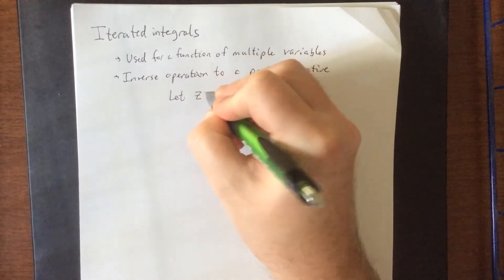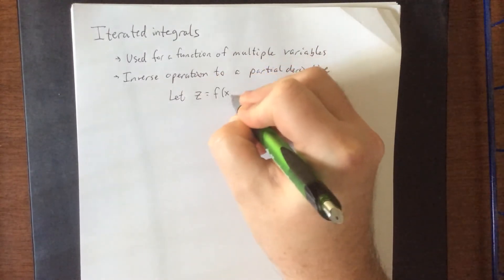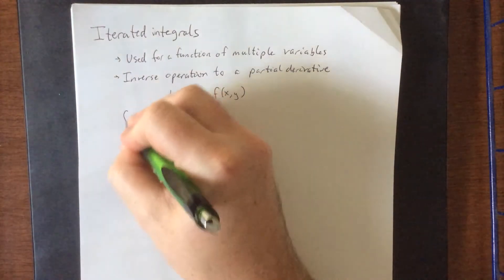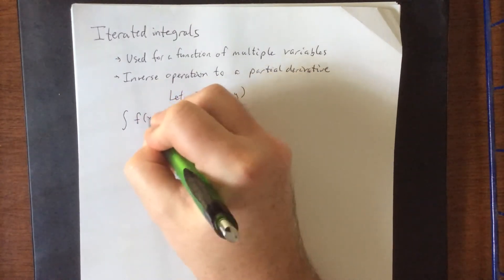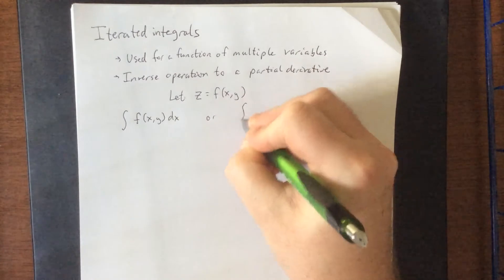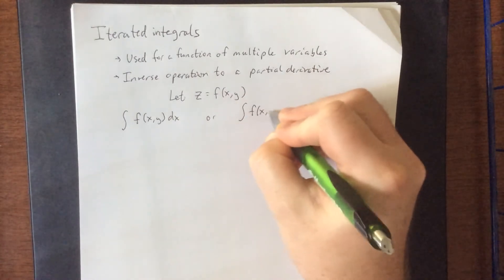So suppose that we have a function of two variables. We'll say that z is a function of both x and y. Then there are two possible iterated integrals that we could do for this. One of them would be to integrate this thing with respect to x, or we could also integrate this thing with respect to y.